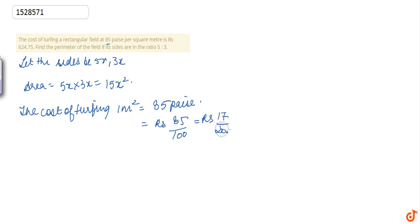That is Rs. 17 by 20. Then, total cost of turfing 15x square is Rs. 15x square into 17 by 20, which is Rs. 51x square by 4.